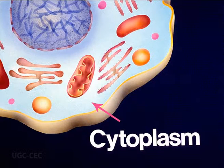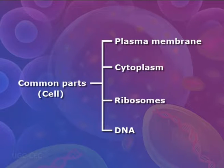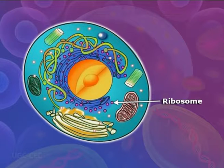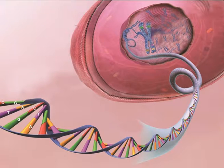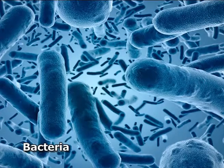Ribosomes are structures in the cytoplasm where proteins are made. DNA is a nucleic acid found in the nucleus of cells and contains the genetic information. These parts — plasma membrane, cytoplasm, ribosomes, and DNA — are common to all cells, present in both bacteria and human beings. These similarities show that all life on Earth has a common evolutionary history.